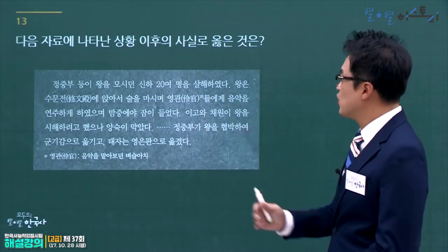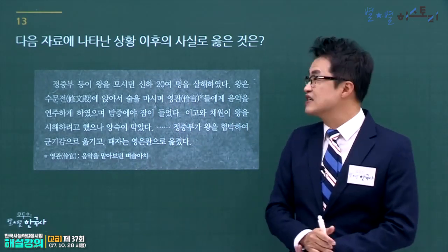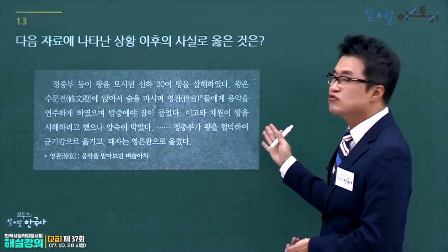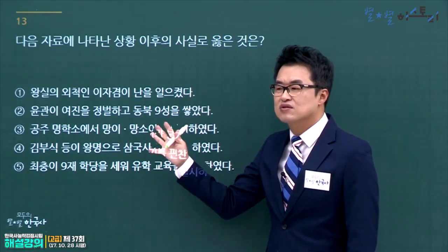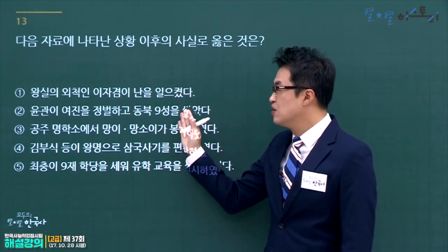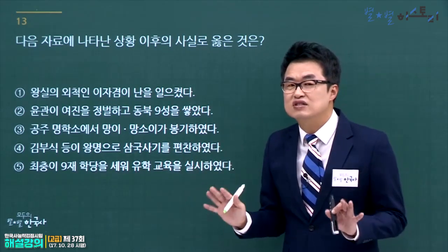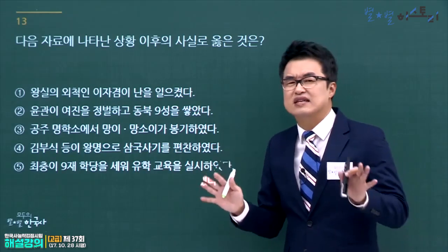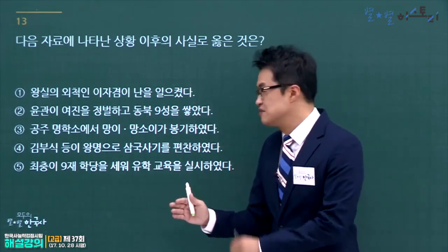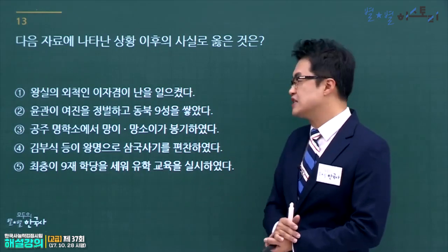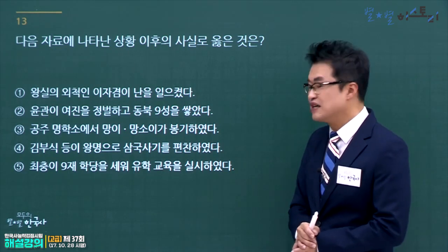정중부와 신하 20명 상해로 시작된 것은 무신정변입니다. 무신정변 이후 사실을 고릅니다. 이자겸의 난과 묘청의 서경천도운동은 무신정변 이전이고, 여진정벌 동북9성도 이전입니다. 무신정권 시기에 망이·망소이의 난, 만적의 난 등이 일어났습니다. 공주 명학소에서 망이·망소이가 봉기한 것이 정답이므로 3번입니다.